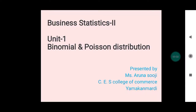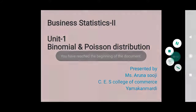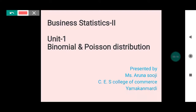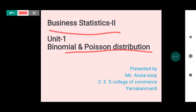Hello students, welcome to the fourth semester statistics. We'll start from unit one, that is binomial and Poisson distribution. You are already known to probability and how to calculate from probability. On that basis only, binomial and Poisson distribution is there — having the same base on probability, only the formula should be changed.